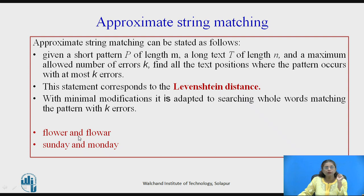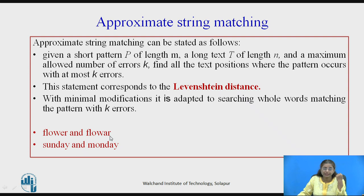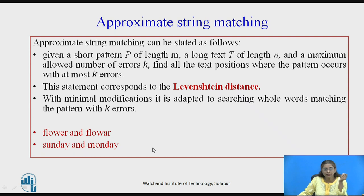Let us see an example: flower and flower. By mistake, instead of 'e' there is 'a'. If the allowed distance or allowed error is 1, still 'flowAr' will get accepted as 'flower'. Or consider typing 'Sunday' and 'Monday'. The difference between Sunday and Monday is 2, because 's' vs 'm' and 'u' vs 'o' differ — the rest of the characters are common. How many errors are allowed determines how we find positions in the text.